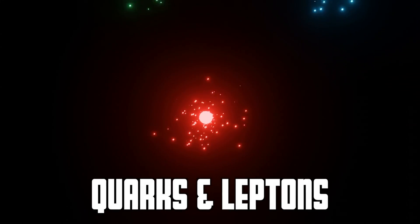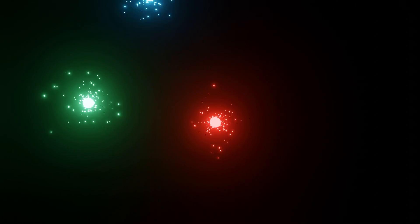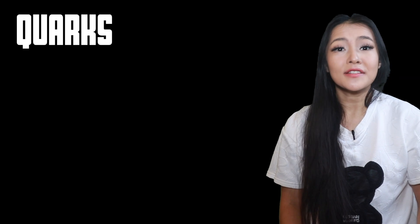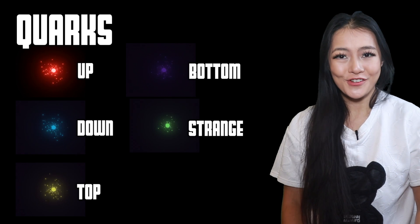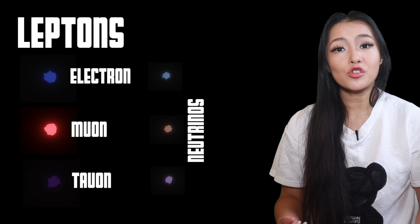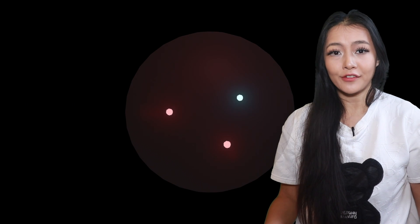Before we go off into space, let us start at our smallest scales. Quarks and leptons are our smallest subatomic particles. Well, if you're a particle physicist, you might even argue that the point-like prion is the true smallest thing, but we don't have any evidence for that. So let's stick with quarks and leptons. Quarks — up, down, top, bottom, strange, and charm — and leptons — electrons, muons, and tauons, and their respective neutrinos — are the building blocks of our universe.